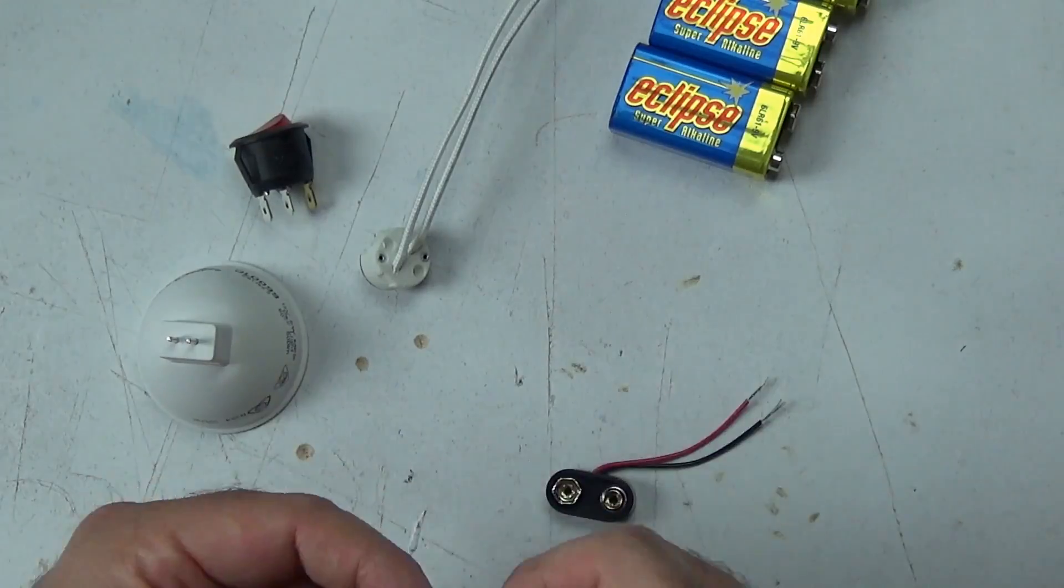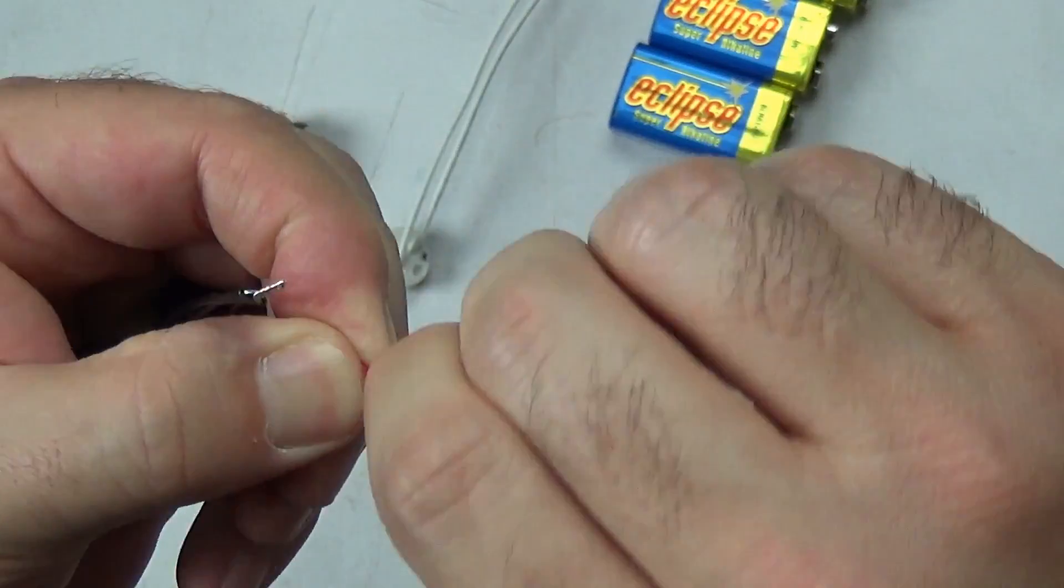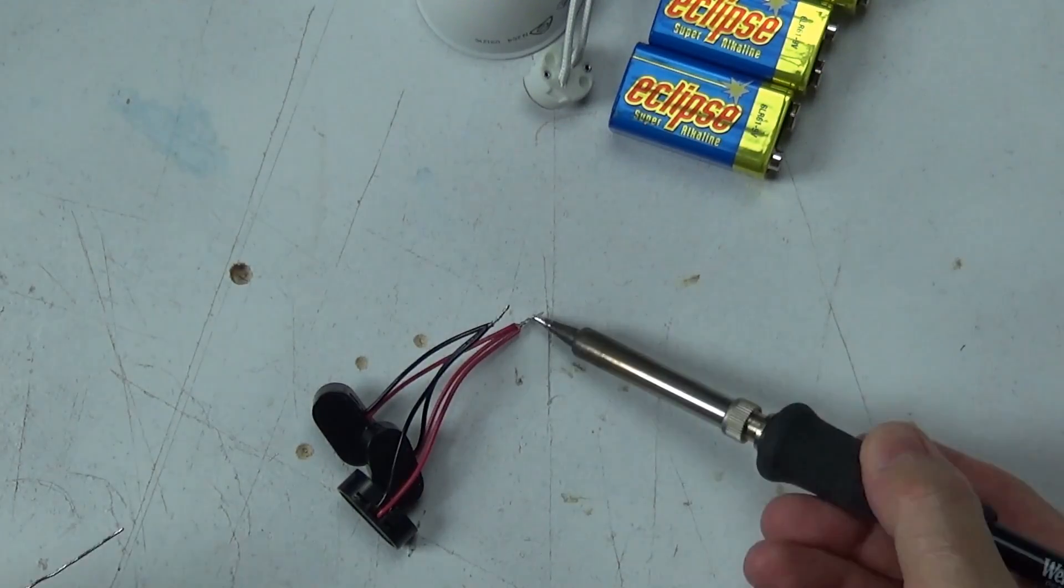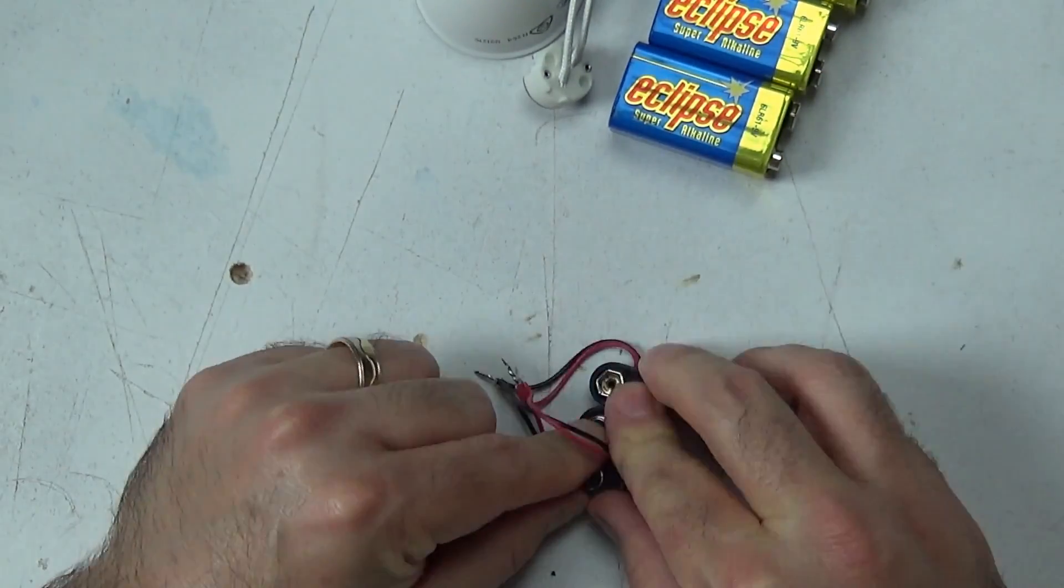So the setup for this really simple. Take your three 9 volt battery snaps and connect all of the red leads and all of the black leads so that you have one red and one black. All of the three 9 volt battery snaps connected together.